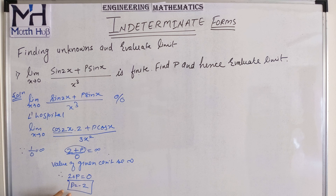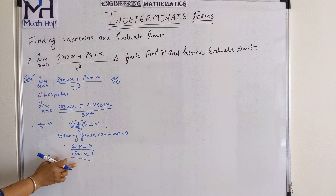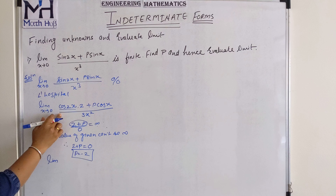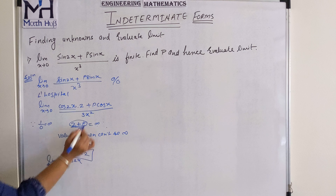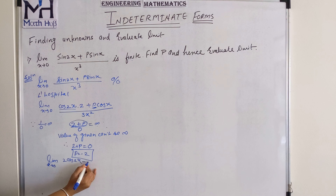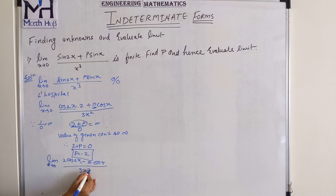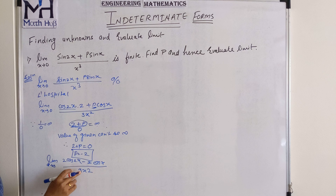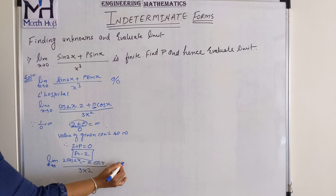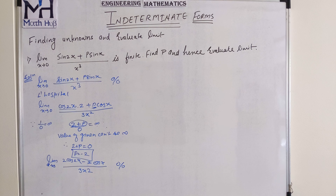So from p + 2 = 0 we get p = minus 2. Now when we substitute p = minus 2 into the function, we have limit x tends to 0 of (2·cos 2x minus 2·cos x) divided by 3x squared. Putting the limit: 2 minus 2 = 0 in the numerator, and 0 in the denominator. So we again get indeterminate form 0 by 0.